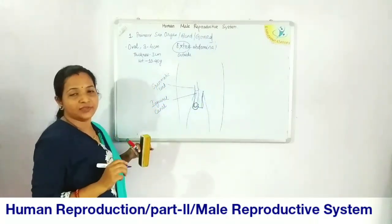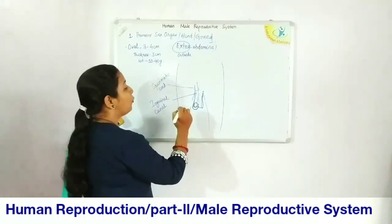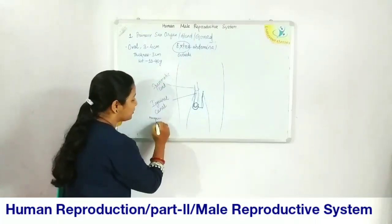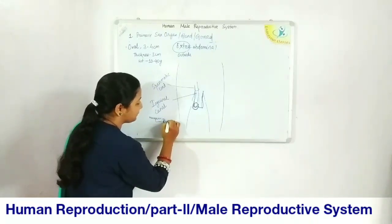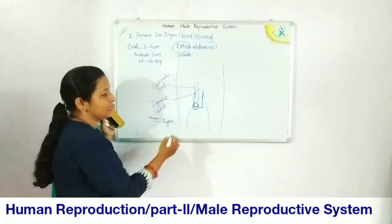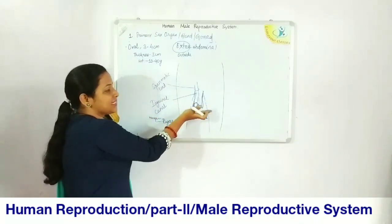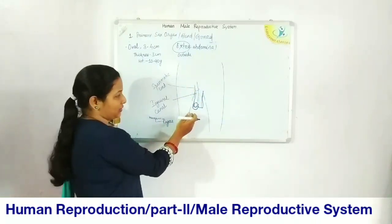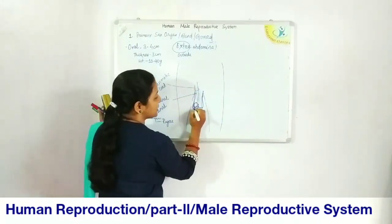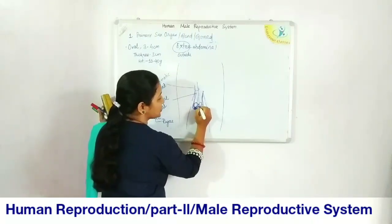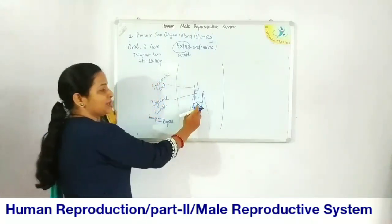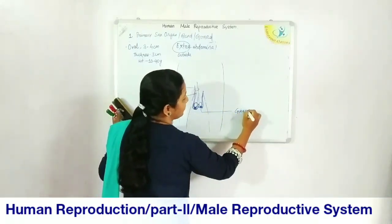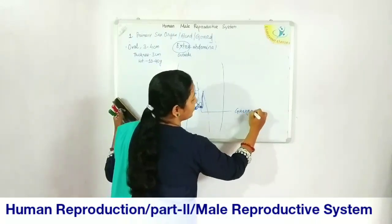The two scrotal sacs are provided with deeply pigmented, rugose folded skin — those super folds are called rugae. The two scrotal sacs are asymmetrical; one is present just above the other. The two testes are held inside the scrotal sacs by means of connective tissue called the gubernaculum.